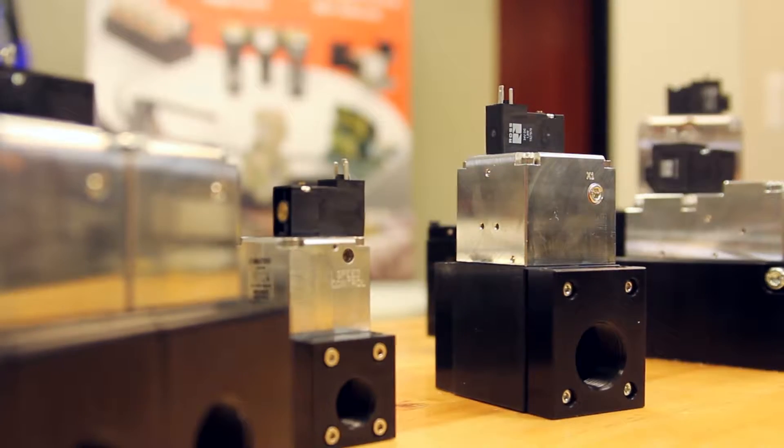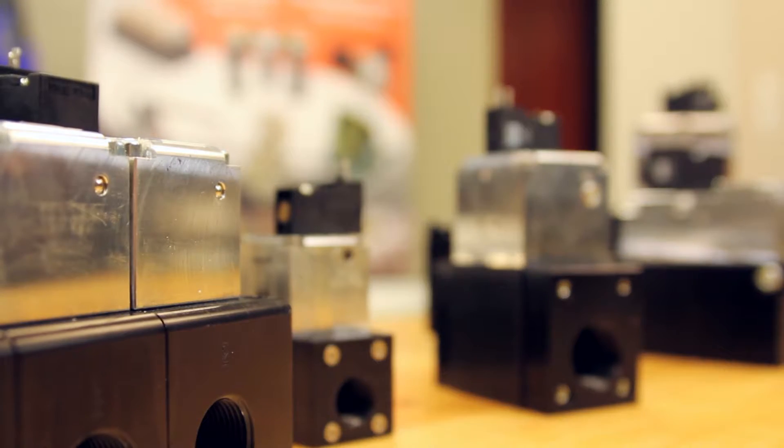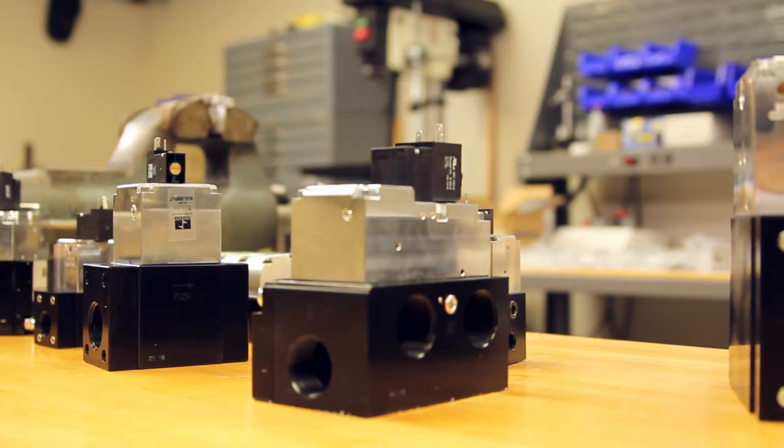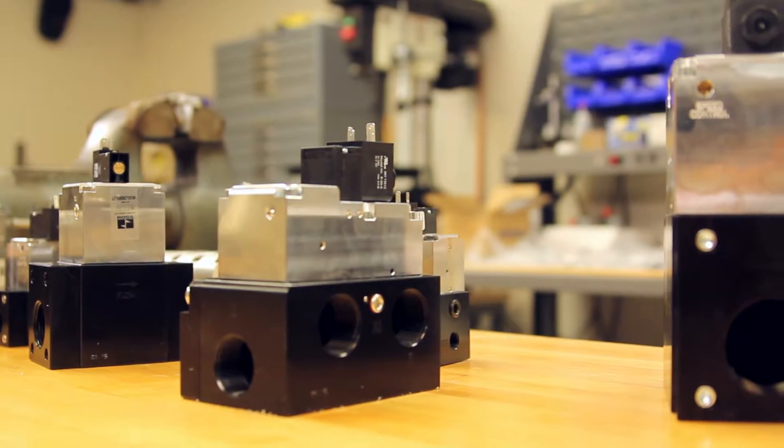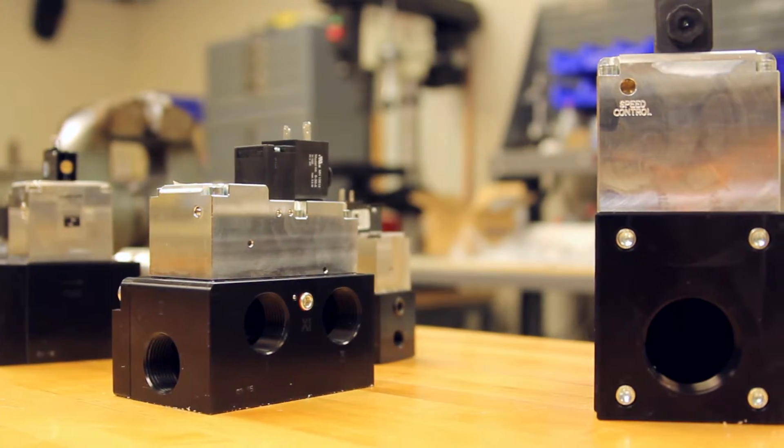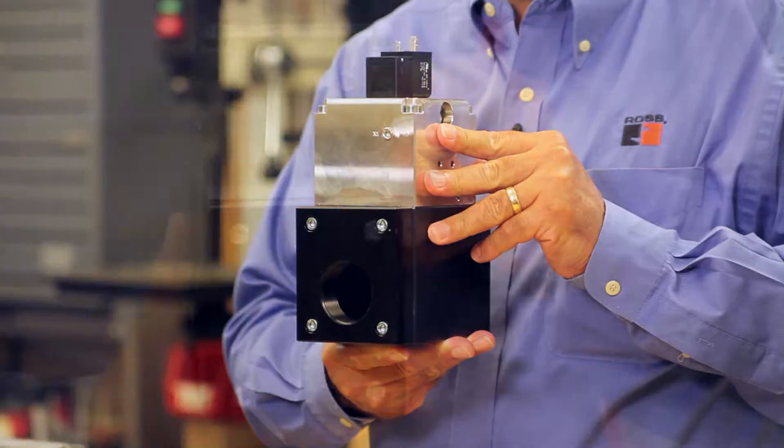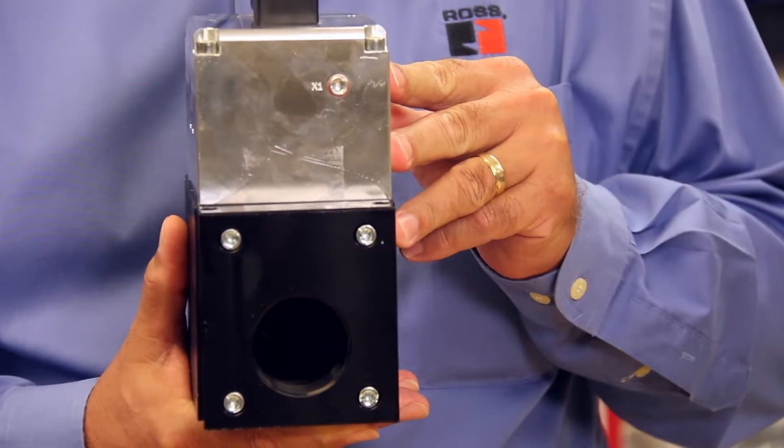There's no spring in the flow path, and the poppet moves up and out of the flow path so that the valve can flow a tremendous amount for a given package size. In fact, our largest valve is a two-and-a-half-inch valve and can flow a CV of 100.